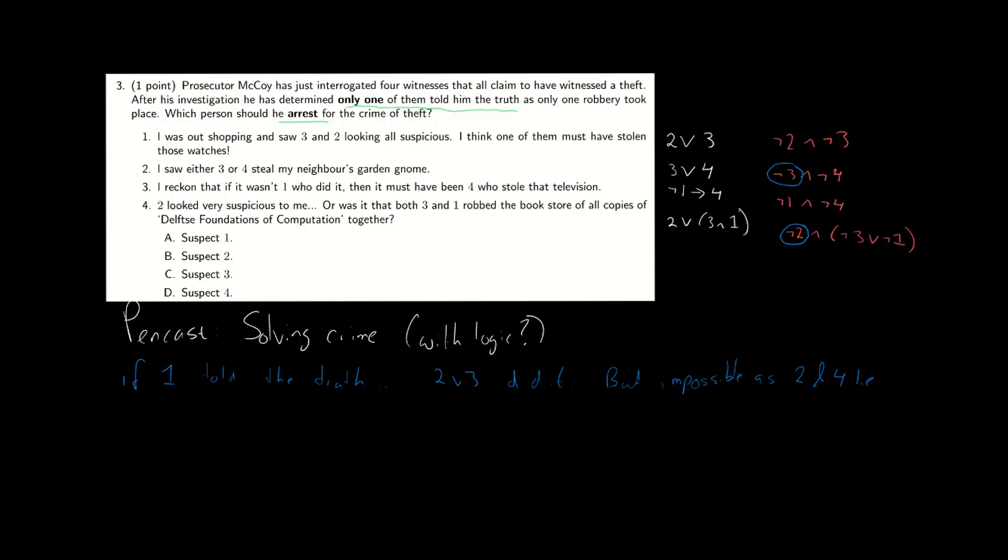Okay, so what if two tells the truth? Well, if two tells the truth, then three or four must have done it. But again, this is impossible. Because if two is telling the truth, then one and three must have lied. And they both tell us that three and four cannot have done it.